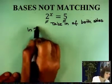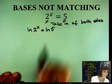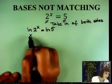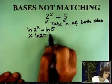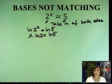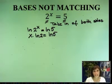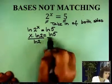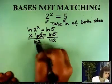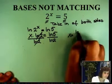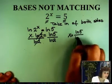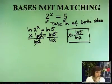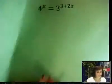Now use your logarithm properties. X comes in front. X times ln of 2 equals ln of 5. ln of 2 is actually a number. So when you have x times a number equals something else, what are you supposed to do? Divide by that number. Then you get x equals ln of 5 over ln of 2. Very good. We can actually do it a little bit harder.